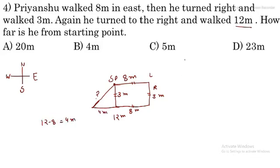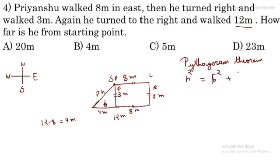Now we will apply Pythagoras theorem. In a right triangle, the hypotenuse squared equals perpendicular squared plus base squared. Naming the sides: AC² = AB² + BC². Here AB is 3 meters and BC is 4 meters. So AC² = 3² + 4².